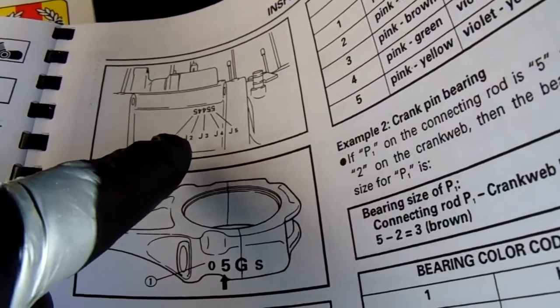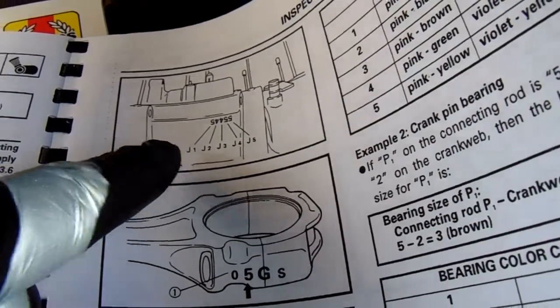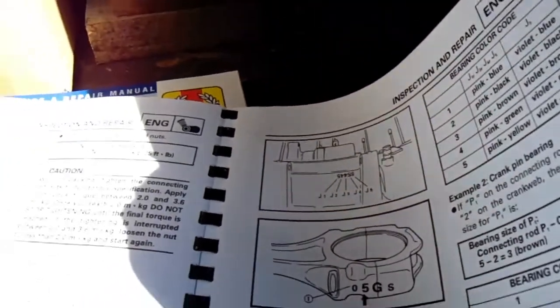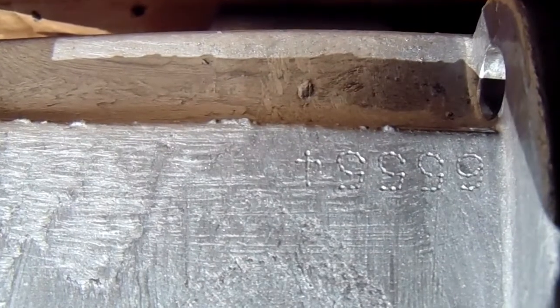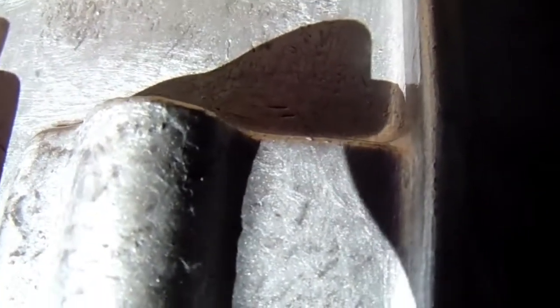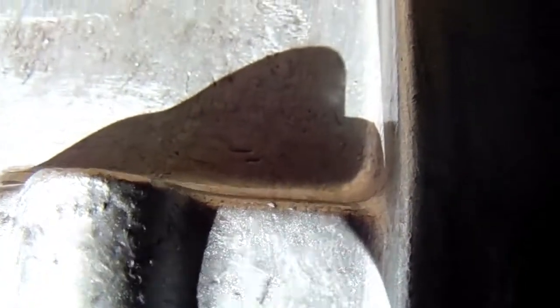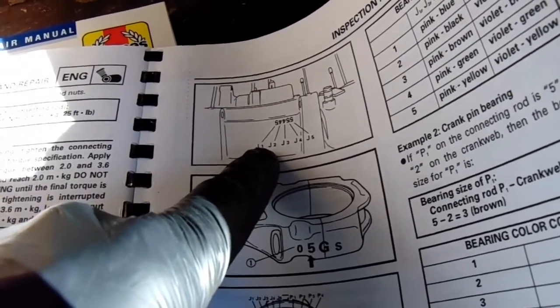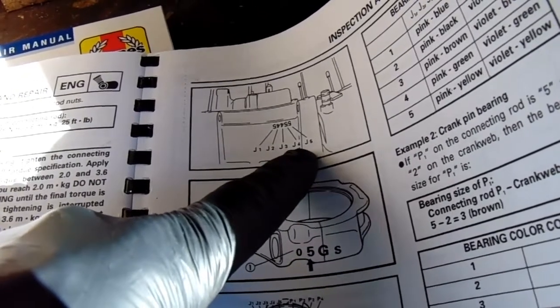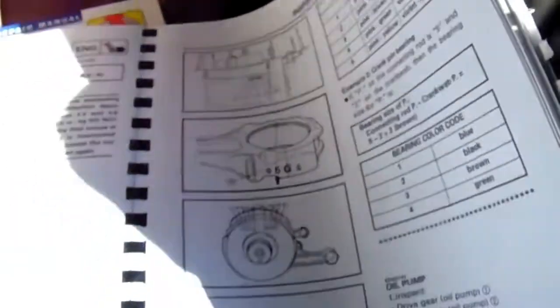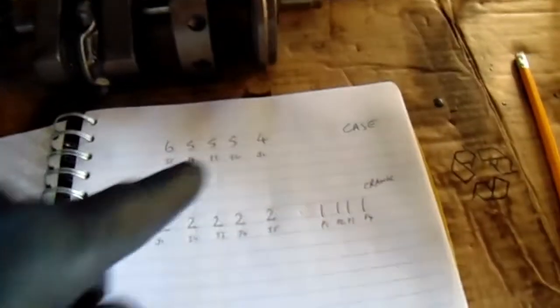Now in the manual, it says the number is upside down, so the J1, I should have turned it this way actually. So the number's there look. So I'm now holding the camera upside down. So from right to left, it says 65554. So number one then will be the four, two, three and four will be five, and then number five will be the six.